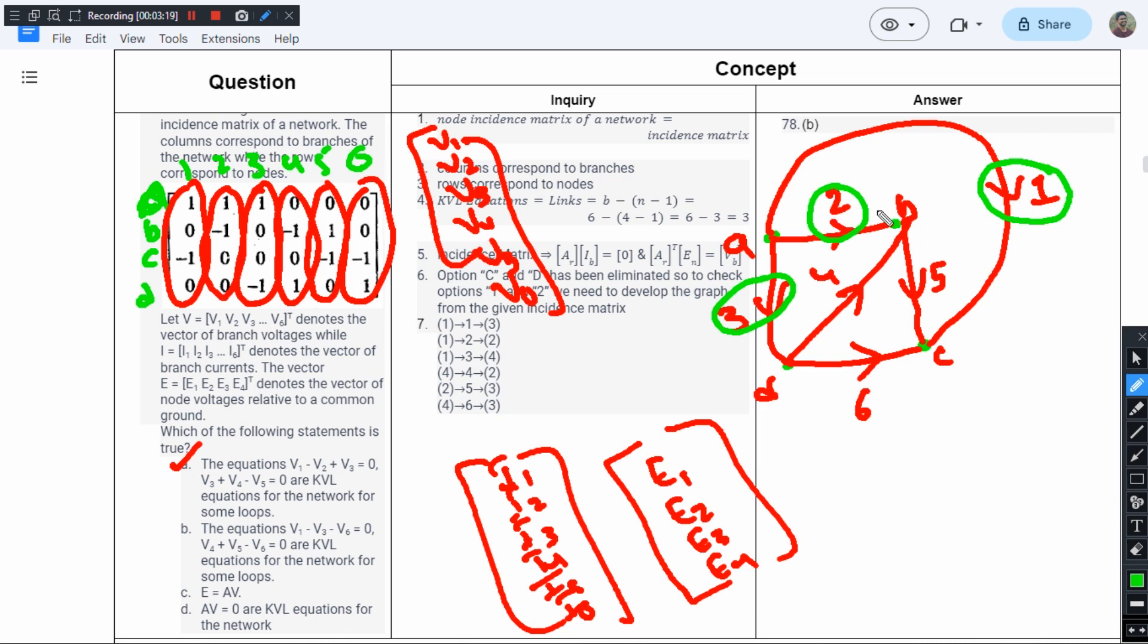V2 and V3 are not forming any closed loops. There is no way to form this equation being equal to zero because Kirchhoff's voltage law can be applied only to meshes and loops. Branches 1, 2, and 3 are not forming a mesh or loop, so the first option cannot be the right answer.